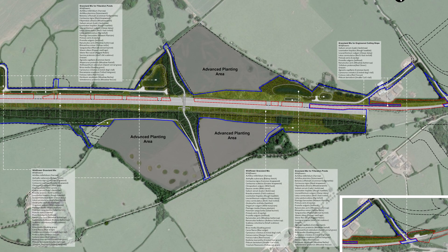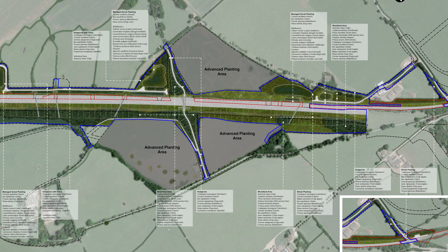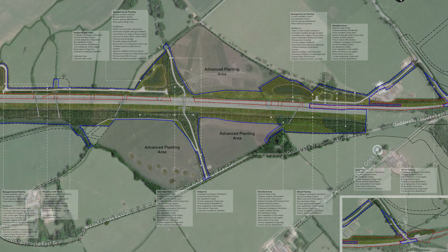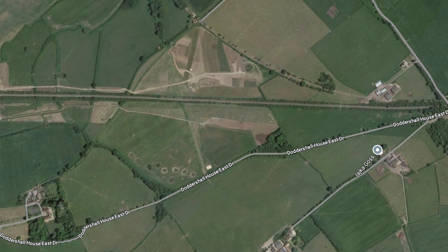Moving further on, we come to the Doddershaw area, and this is the diagram showing all the grassland mixes, trees, and all the hedgerows and woodland areas. And here is how it looked before.